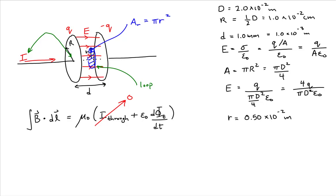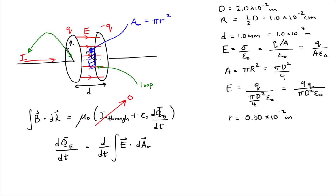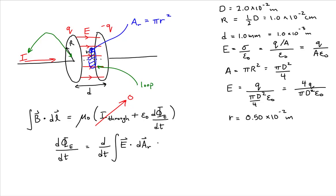That means the only way we could have a magnetic field is if we have an electric flux that's changing with respect to time through the loop. So let's look at this expression: the time rate of change of the electric flux, given by the time rate of change of the surface integral of the electric field and the area bounded by our Amperian loop. We represent the dot product as the product of the magnitude of the electric field, the cosine of the angle between the electric field and the area of our Amperian loop, and the area differential.